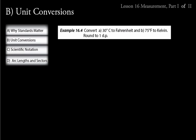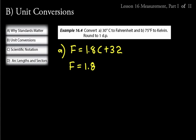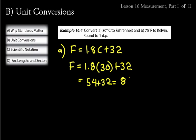Now let's do temperature conversions — these require formulas, not conversion factors. A: Convert 30 degrees Celsius to Fahrenheit. Use the formula: F equals 1.8C plus 32. Replace C with 30: 1.8 times 30 plus 32 equals 54 plus 32, which equals 86 degrees Fahrenheit. So 30 degrees Celsius is the same as 86 degrees Fahrenheit.